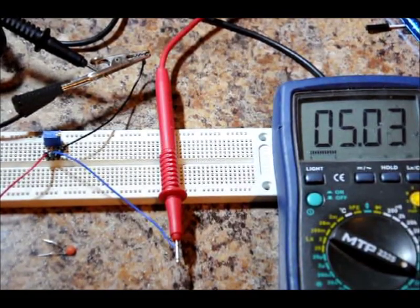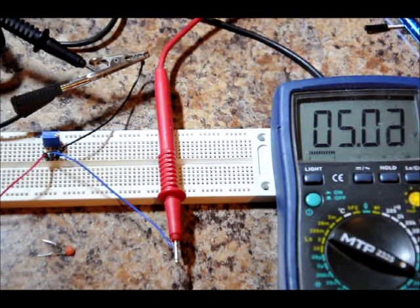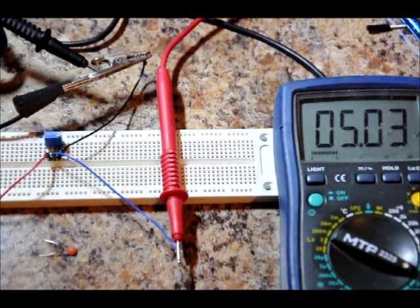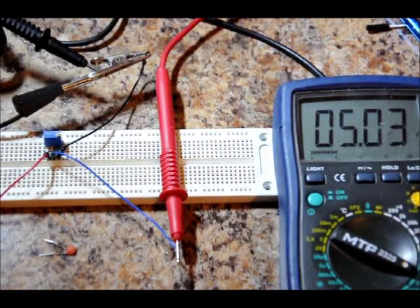You can make your own resistor dividers easily using two resistors and watching the video link below. But if you want a quick and easy way to do it, potentiometers are the way to go.